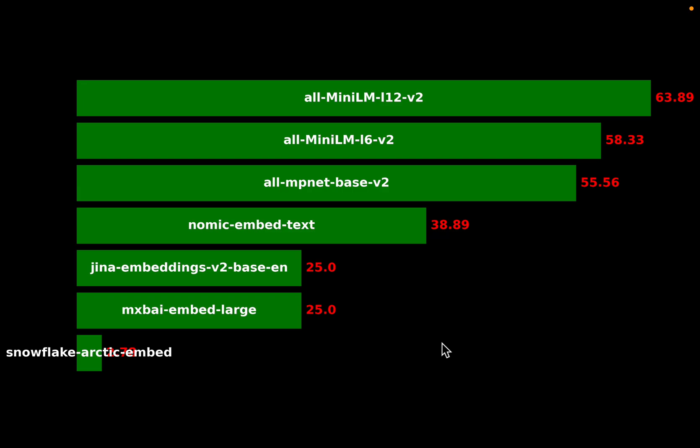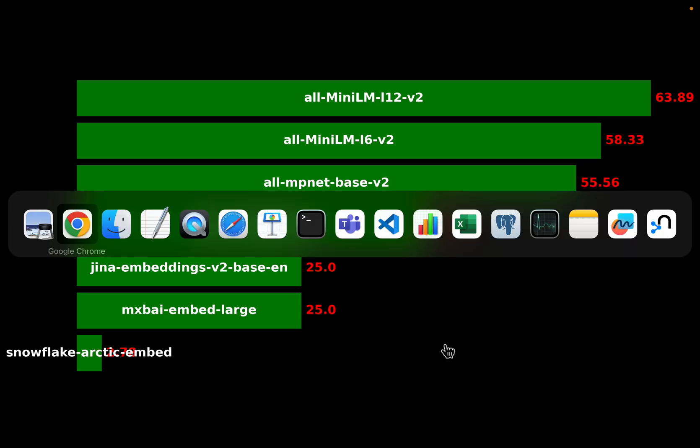Hi friends, let's find out the best open source LLM for RAG retrieval. We know RAG consists of at least two LLMs: a retriever and a generator. The retriever retrieves the relevant context from the vector database, and the generator synthesizes the response using the context provided by the retriever.